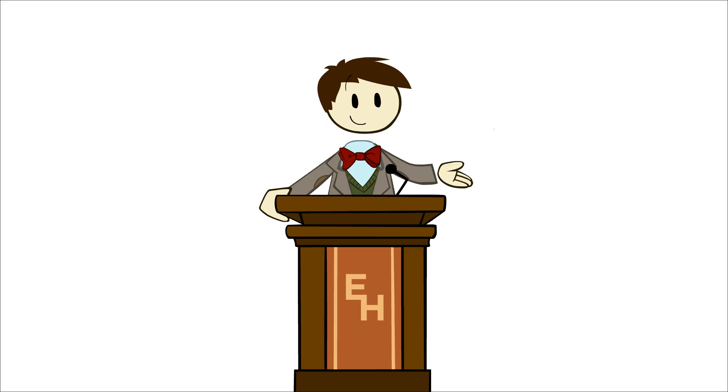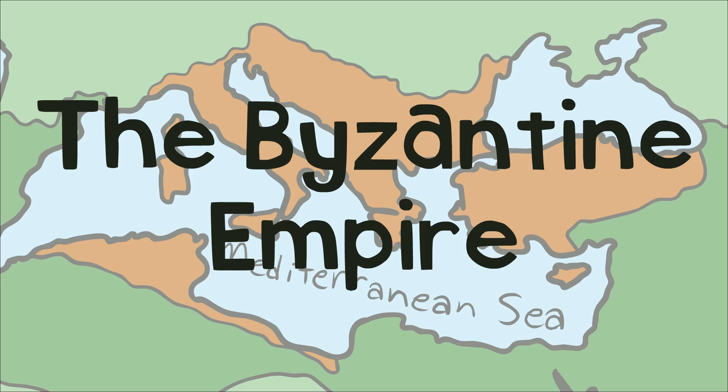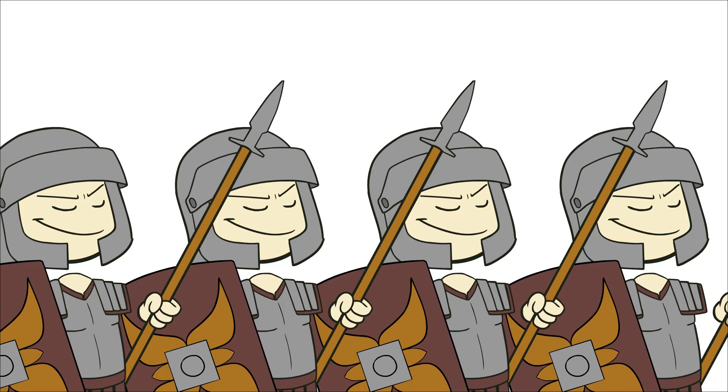But there was somewhere else, somewhere further east, that safeguarded this knowledge and kept the light of Rome alive. This was Eastern Rome, the Byzantine Empire. Shield of fledgling Europe while it clawed its way back from its great collapse.